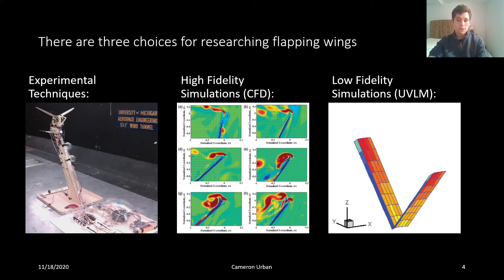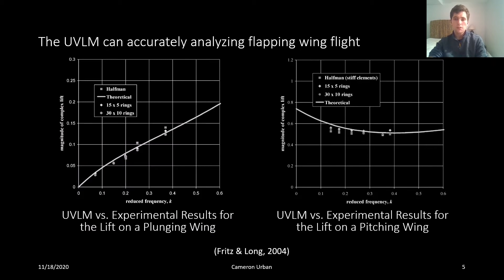All three of these methods have their uses. However, I'm going to focus on the low-fidelity simulation methods, specifically the UVLM, because it is the most underutilized, especially in engineering applications. For example, when designing a flapping wing robot, hundreds of configurations may need to be analyzed to find a solution that works. This simply cannot be done with CFD or using experimental techniques. This choice of solution is made on an underlying assumption: that the UVLM can accurately simulate flapping wings in the first place. This assumption is proven to be correct by a paper that came out of Penn State in 2004. The authors wrote their own UVLM and then compared its results to experimental and theoretical data for simple flapping wing motions.